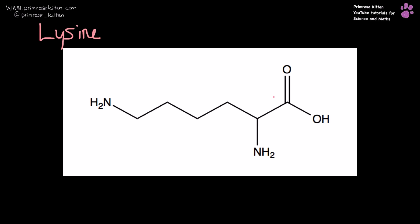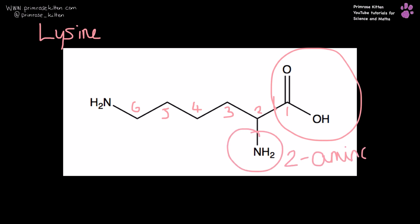Lysine here. Here is our carboxylic acid group. Numbering them: one, two, three, four, five, six. That gives us a 2-amino and a 6-amino, making it 2,6-diaminohexanoic acid.